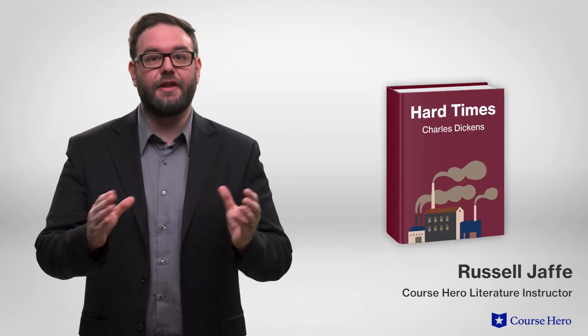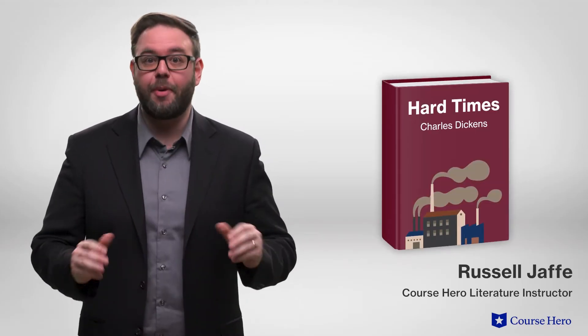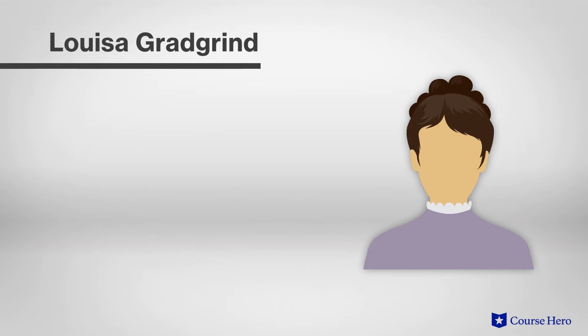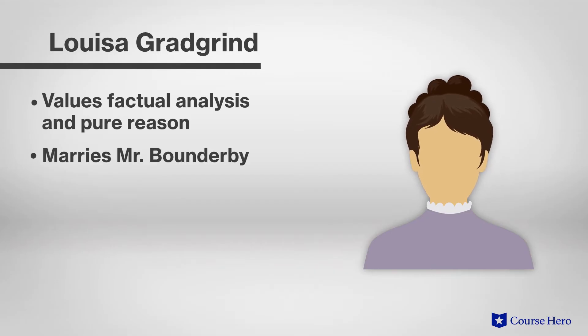There are seven key characters in the Charles Dickens novel of facts, factories, and friendship, Hard Times. Louisa Gradgrind absorbs her father's teachings about the value of factual analysis and pure reason as a child, rejecting imagination and sentiment completely. She marries Mr. Bounderby, a man 30 years older, because she believes it matters little whom she marries and has no other prospects at the time. When she meets James Hardhouse, she spins into a crisis of conscience and must reevaluate her understanding of herself and her world.